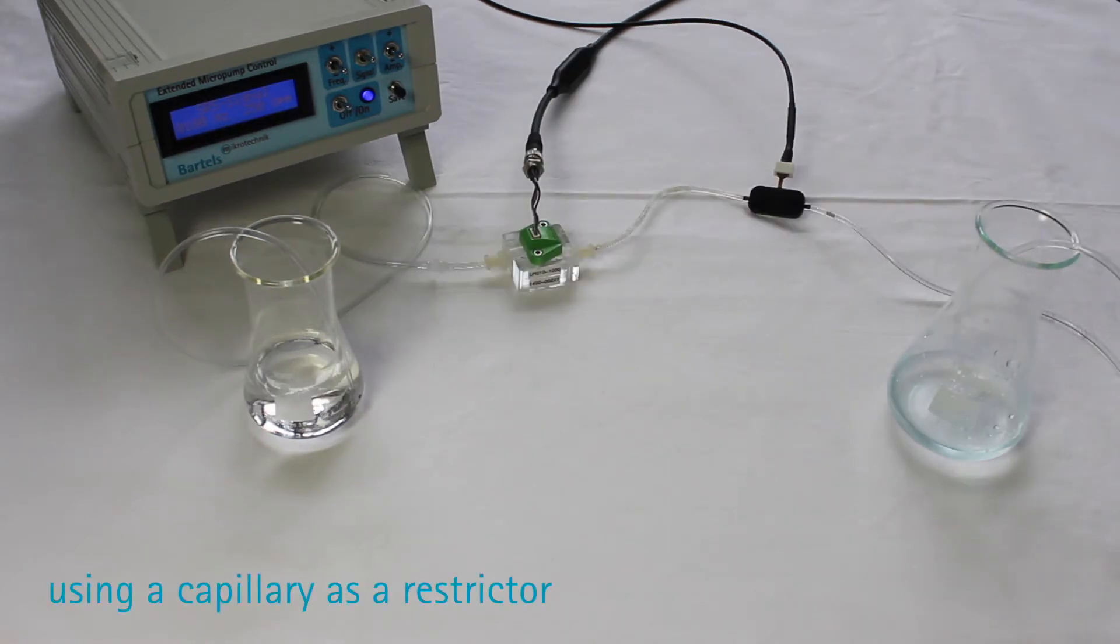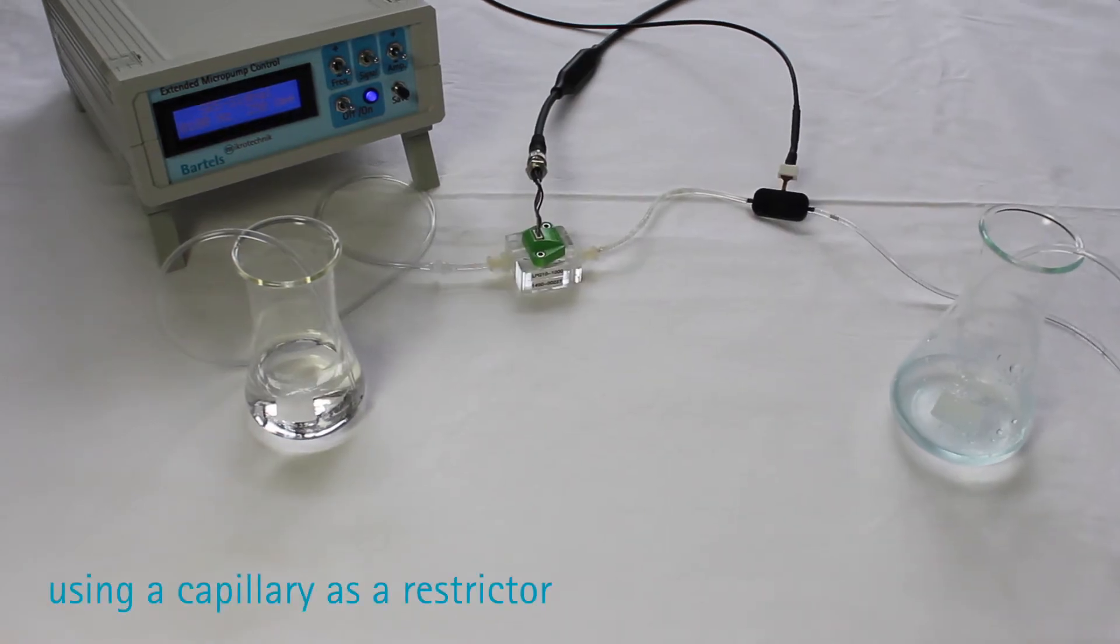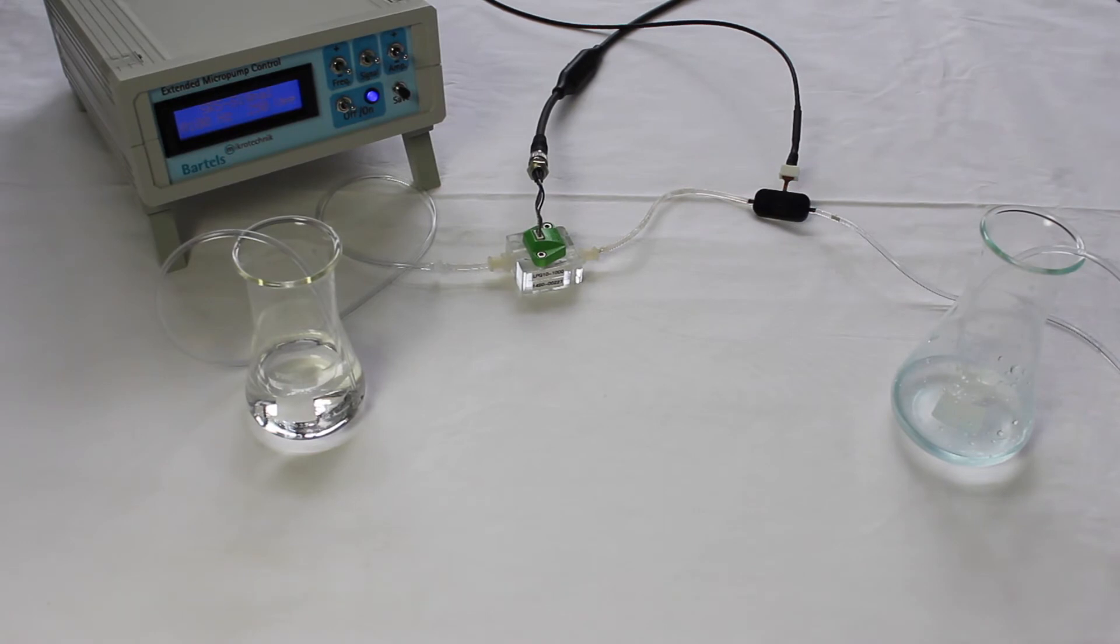This tutorial concentrates on using a capillary as a restrictor as it allows adjustment to a desired flow rate by changing its length.